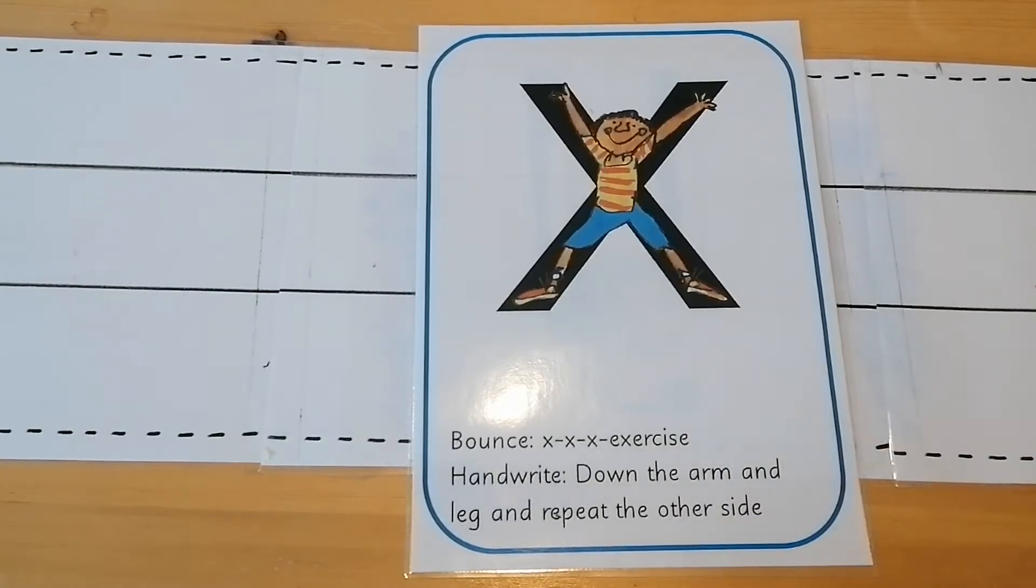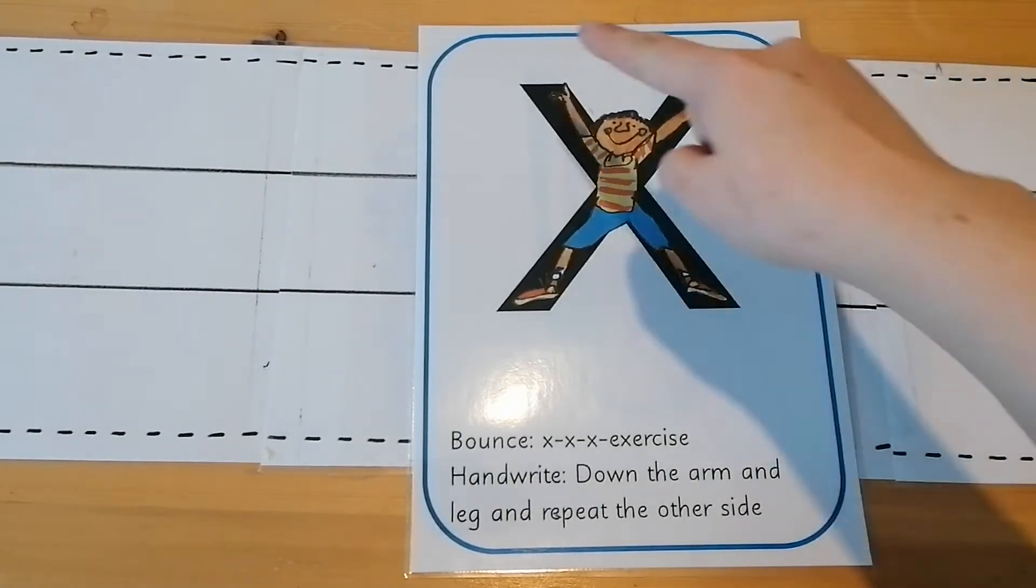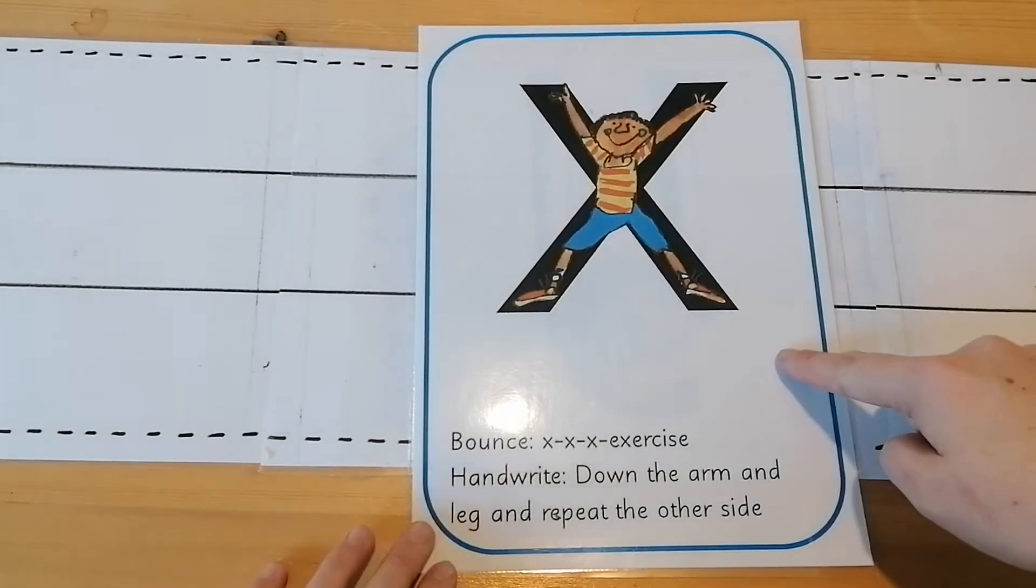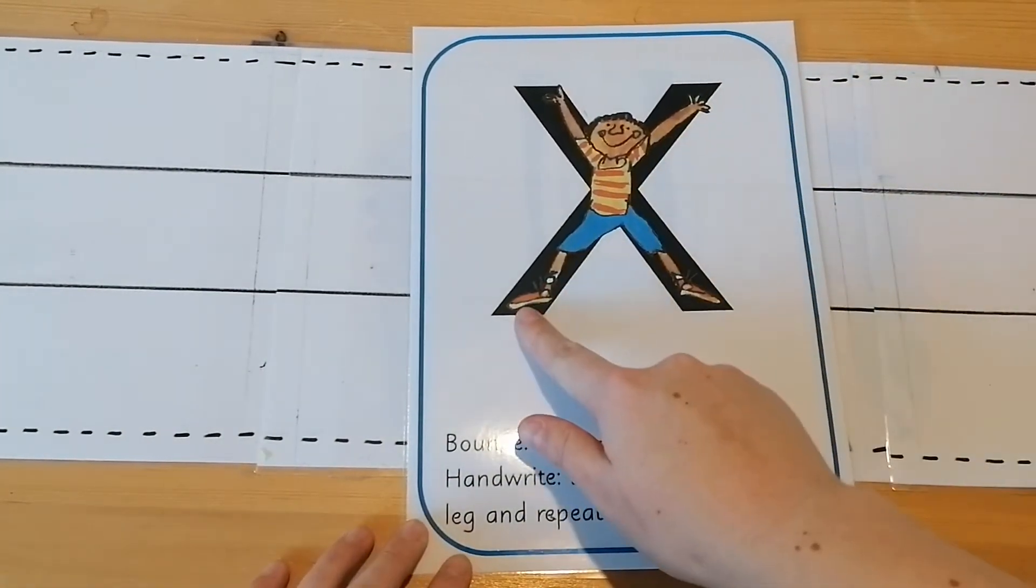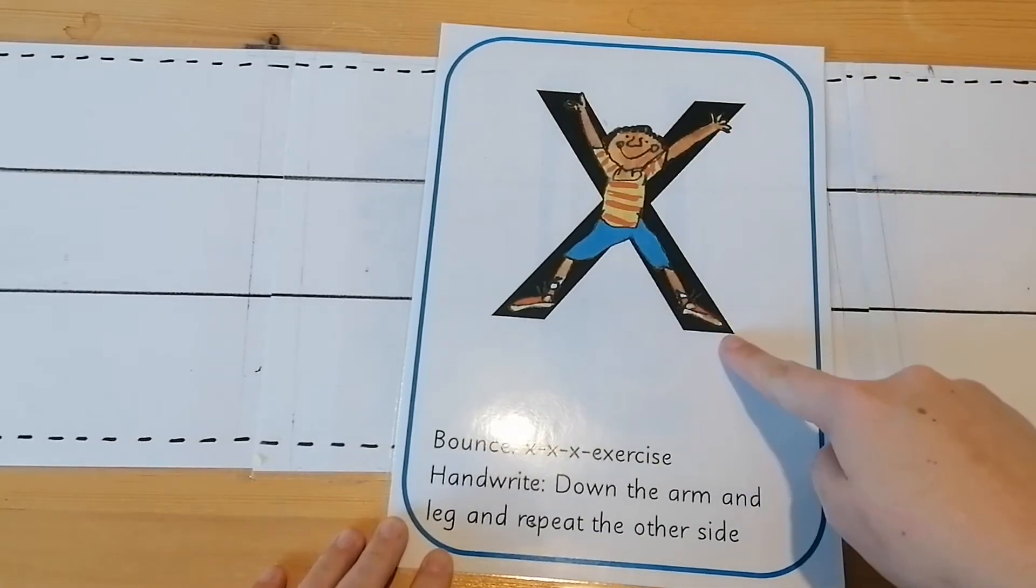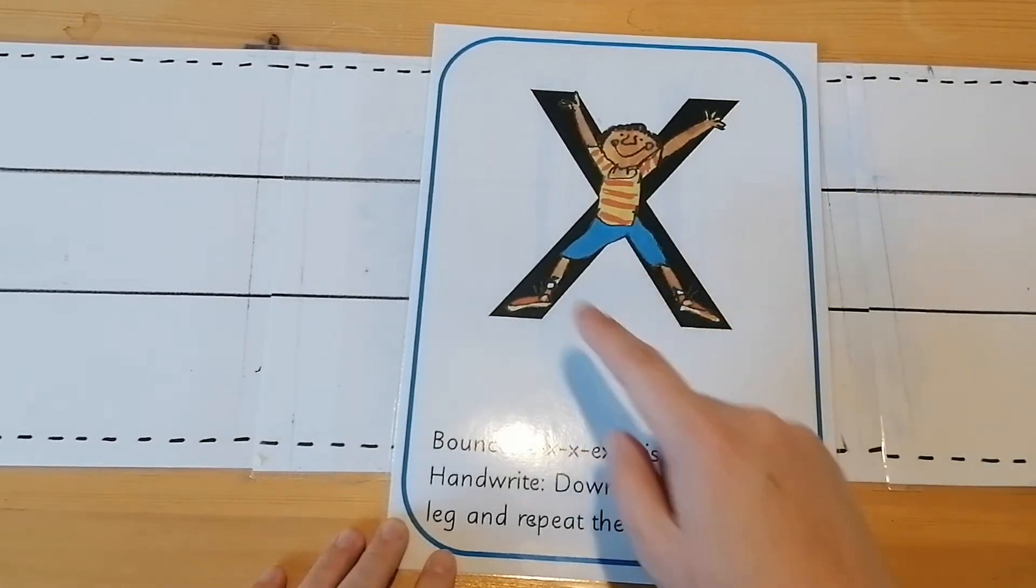Okay, to do this we're going to learn a new rhyme. We go down the arm and leg and repeat the other side. Can you say that? Down the arm and leg and repeat the other side.